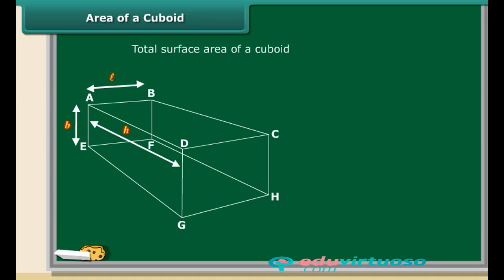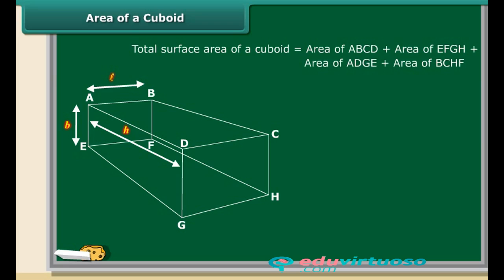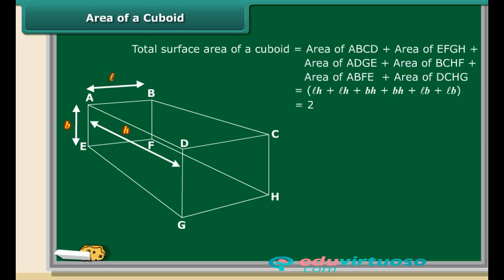The total surface area of a cuboid is equal to the sum of the areas of its 6 faces: ABCD, EFGH, ADGE, BCHF, ABFE and DCHG, which is LH + LH + BH + BH + LB + LB. Therefore, total surface area of a cuboid is equal to 2 into (LB + BH + HL).